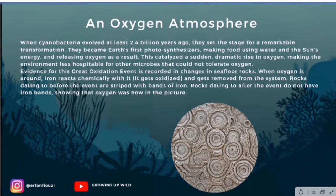Cyanobacteria caused a dramatic rise in oxygen, making the environment less hospitable for other microbes that could not tolerate oxygen at all. Evidence for this great oxidation event is recorded in changes in seafloor rocks. Where oxygen is present, iron reacts chemically with it — it rusts, or gets oxidized, and is removed from the system. Rocks dating to before the event are studded with bands of iron, while rocks dating to after the event do not have iron bands at all, showing that oxygen was now in the picture.